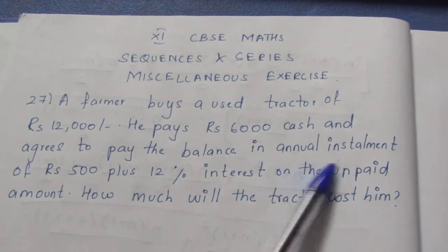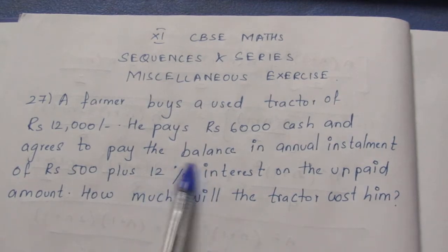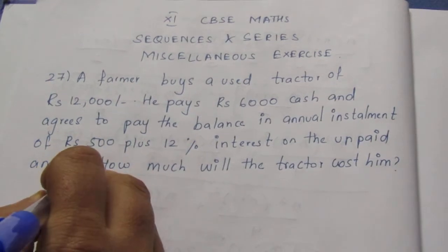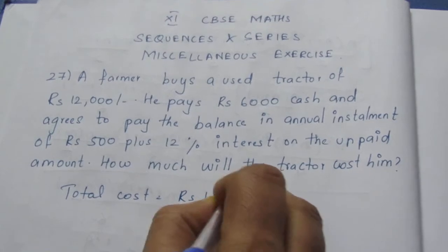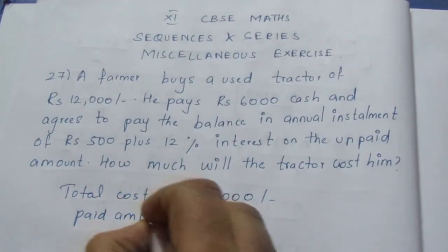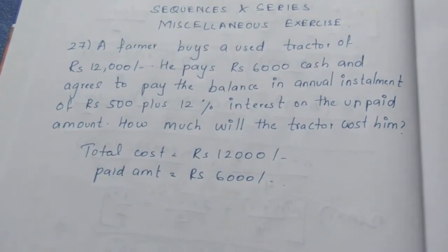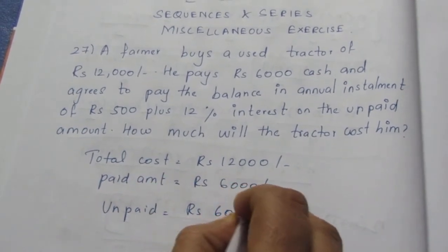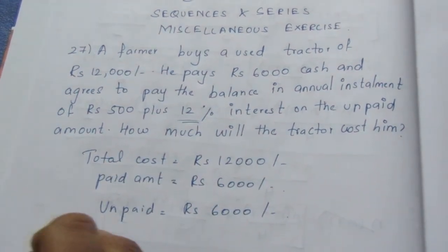The number of months is 12. Each month he pays 500 plus 12% interest on the unpaid amount. Total cost is 12,000. Paid amount is rupees 6,000, and unpaid amount is rupees 6,000. Every month he pays 12% interest on the unpaid balance.